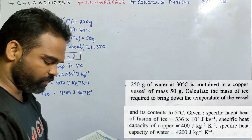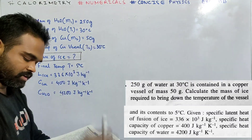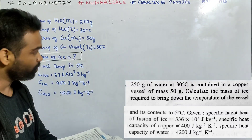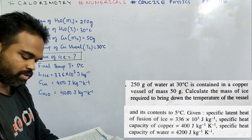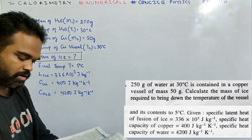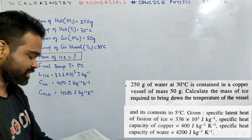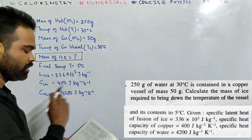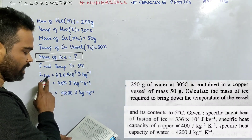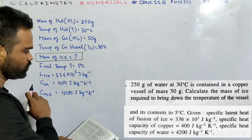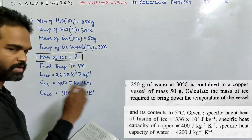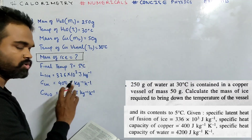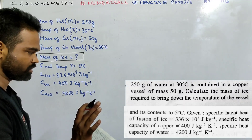Let us read this. 250 gram of water at 30 degree centigrade is contained in a copper vessel of mass 50 gram. Calculate the mass of ice required to bring down the temperature of the vessel and its contents to 5 degree centigrade. Given L of ice is 336 × 10³ joule per kg, C of copper is 400 and C of water is 4200 joule per kg per Kelvin.